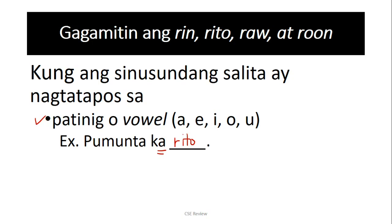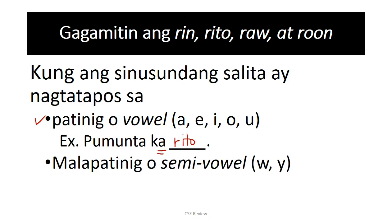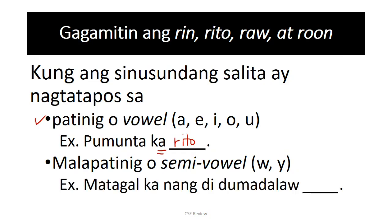Parin and raw — anything that starts with an R — dapat it precedes a vowel. The other exception is, pag merong malapatinig or semi-vowel — ito ng Filipino language — when it ends with a W or a Y, it's counted as a semi-vowel, which means the rule also applies. So, when it ends with a W, yung sinusundang word, it also becomes R. So, 'matagal ka nang di dumadalaw dito' — you can't say 'dumadalaw dito.' Since ang W counts as that, it starts with an R din.